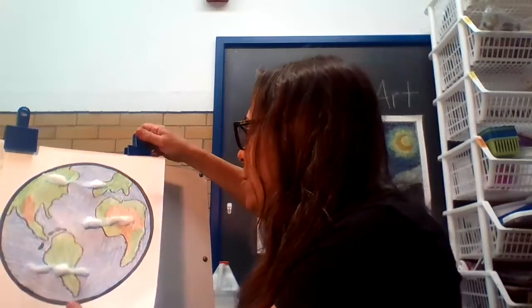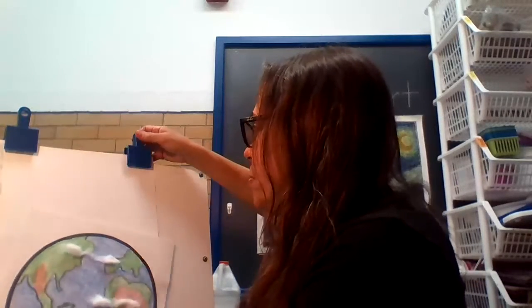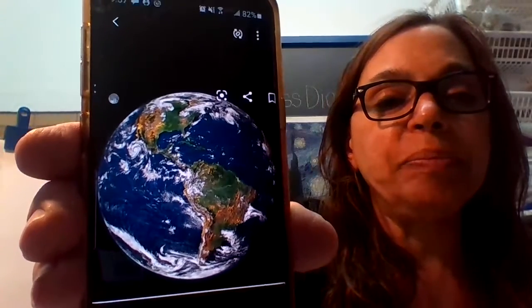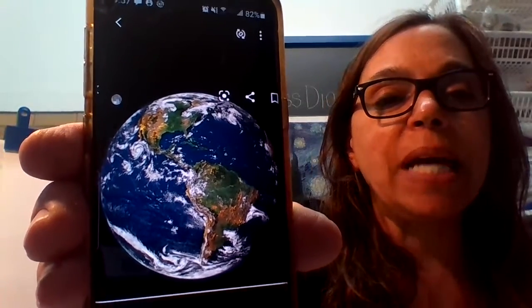These white things, these cotton balls, represent clouds. I'm going to show you how to do this. First, I want to show you a picture of what the Earth looks like from the sky.